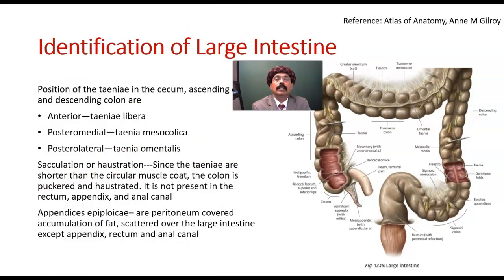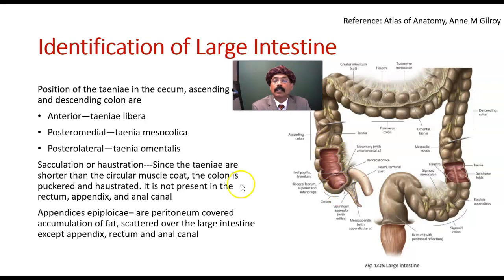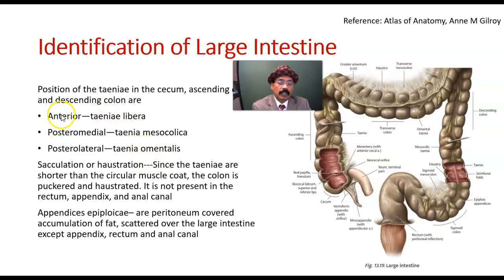The positions of taenia coli in the sigmoid colon, ascending colon, and descending colon are: anteriorly — taenia libera; this is taenia libera here; then posteromedial — taenia mesocolica; and posterolateral — taenia omentalis. These names — anterior, posteromedial, posterolateral — apply to the taenia coli in the sigmoid, ascending, and descending colon.